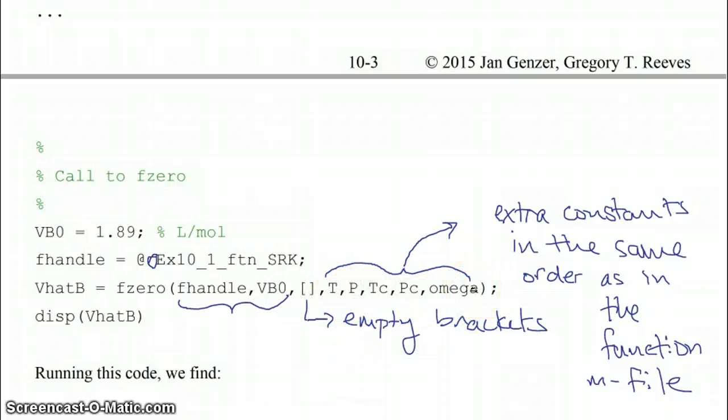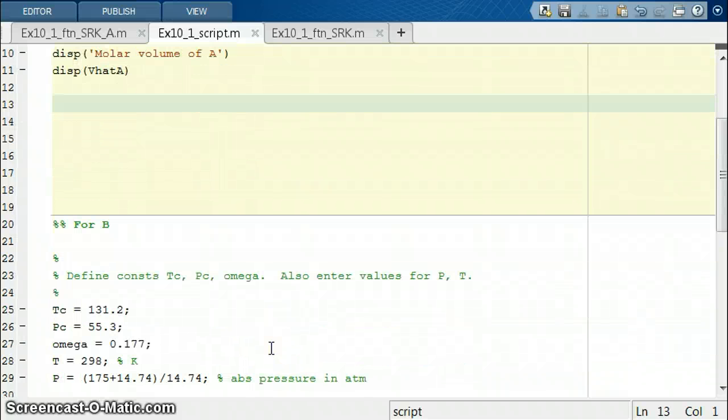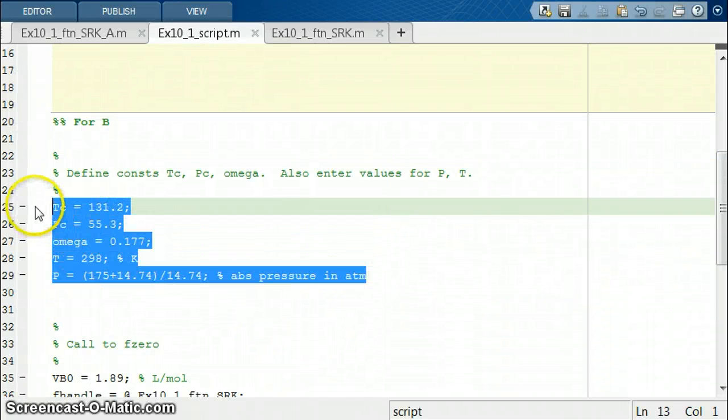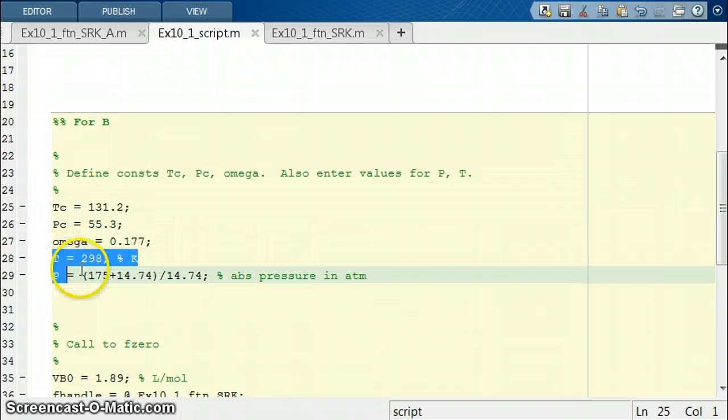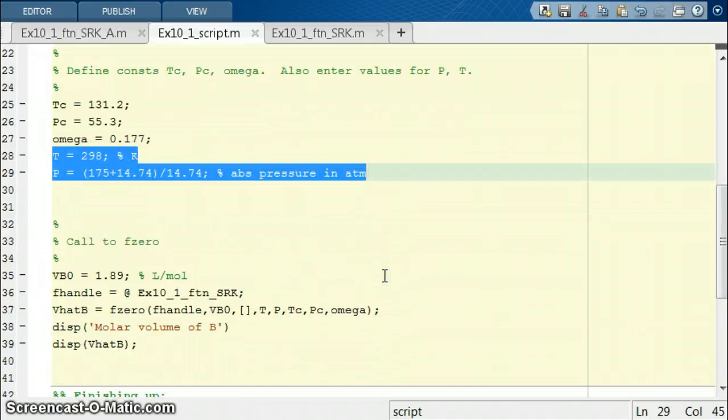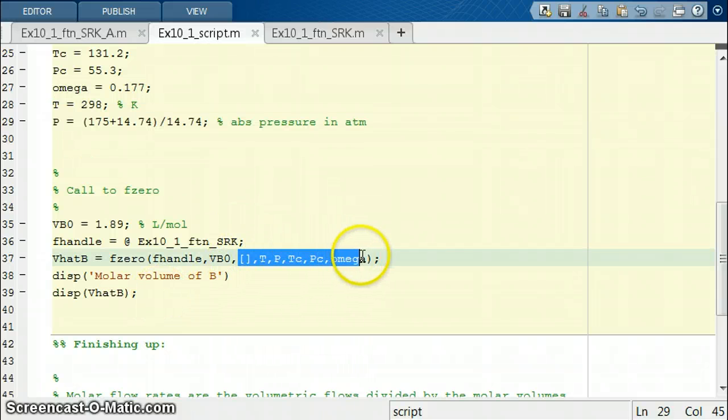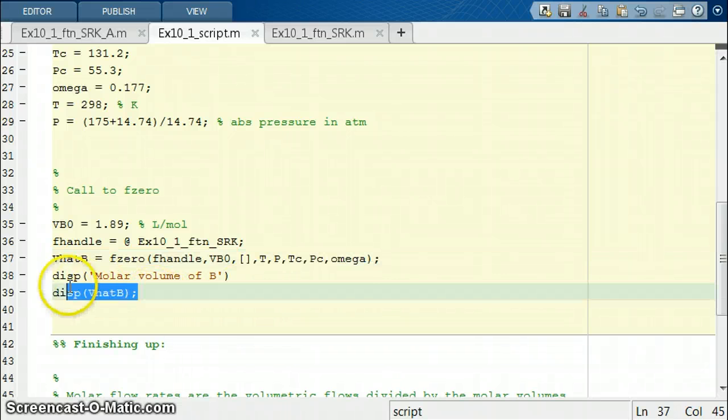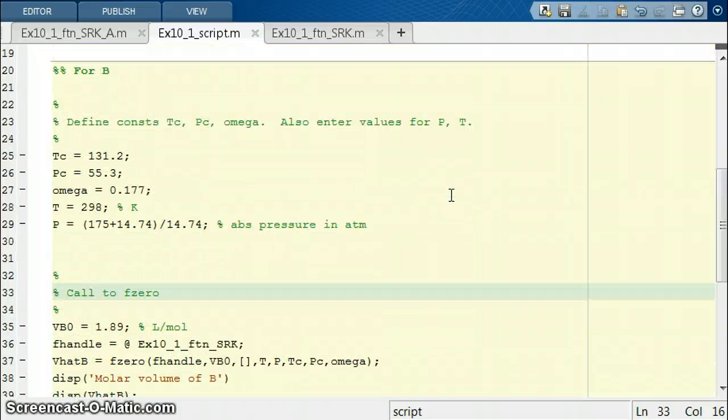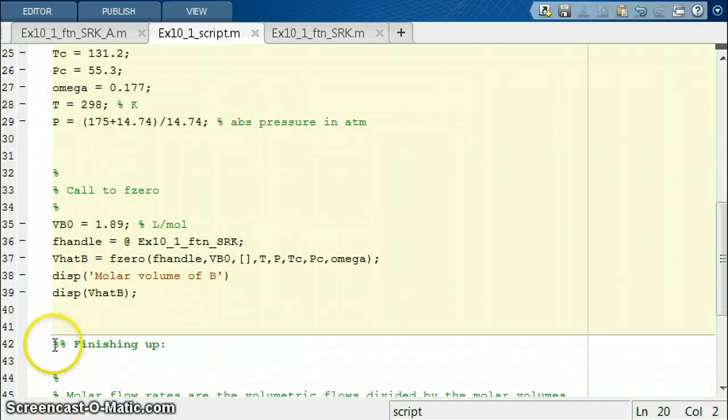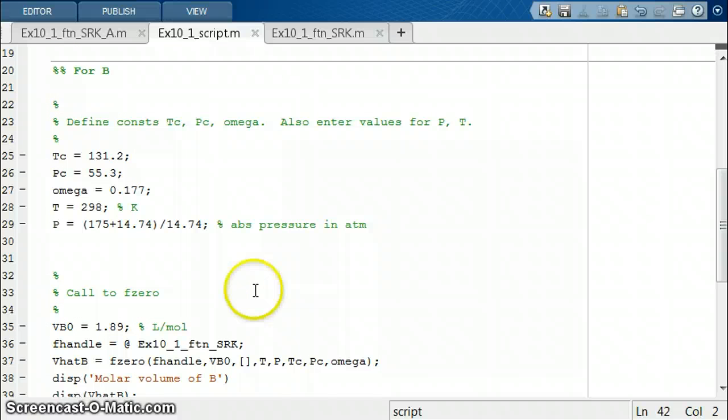So what does that script now look like? Well if we scroll down to the next lines in our script we have our definitions of the three gas specific quantities and also our two conditions T and P for that pipe. And then our call onto fzero looks just like what we had before except for now we have the empty brackets followed by the five extra constants that are present in the function. And then again we're going to display our output. So when I run this again by hitting control enter so that it evaluates all the lines of code in between that double percent sign and this double percent sign, what we find is that our molar volume of B is 1.9027.